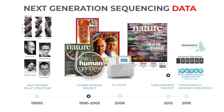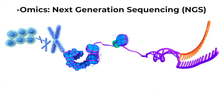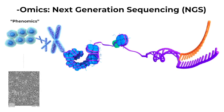Today, there is an ever increasing number of genomic, transcriptomic, proteomic, and metagenomic data sets available to describe subcellular processes with highly detailed digital data. The omics technologies are used to explore the roles, relationships, and actions of the various types of molecules that make up the cells of an organism. Many types of omics data can be generated using NGS, or what is also known as high throughput sequencing.